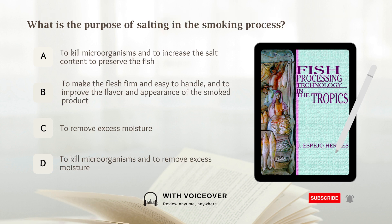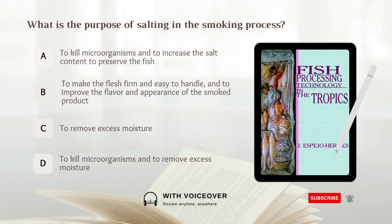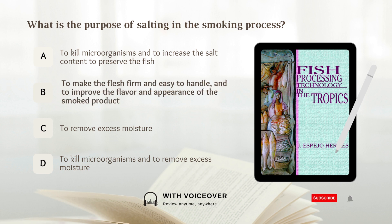What is the purpose of salting in the smoking process? A. To kill microorganisms and to increase the salt content to preserve the fish. B. To make the flesh firm and easy to handle, and to improve the flavor and appearance of the smoked product. Answer: B. To make the flesh firm and easy to handle, and to improve the flavor and appearance of the smoked product.